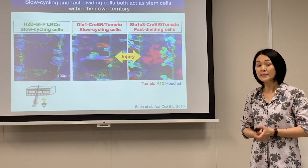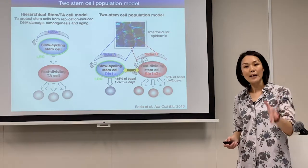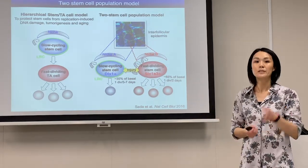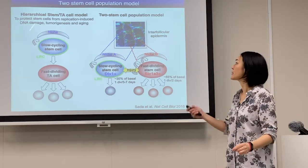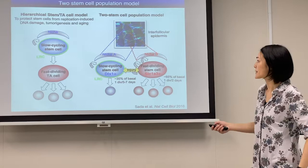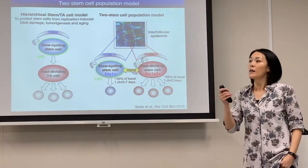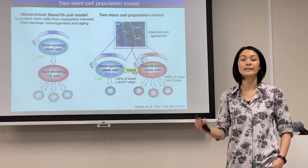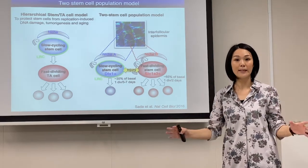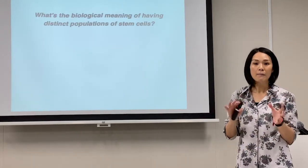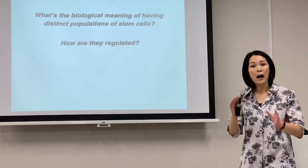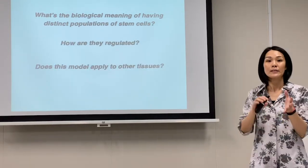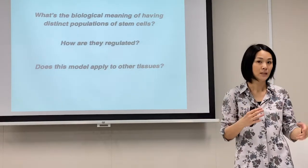To summarize: in the hierarchical model, the slow cycling cell acts as a unique stem cell population that gives rise to fast dividing progenitor cells. In contrast, in interfollicular epidermis, there are two distinct populations of stem cells that divide at different rates and reside in different territories of the epidermis. We are trying to further address what's the biological meaning of having those two populations of stem cells, how they are regulated, and whether this is a more universal model that applies to different tissues.